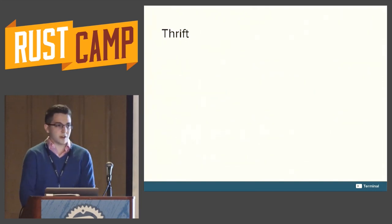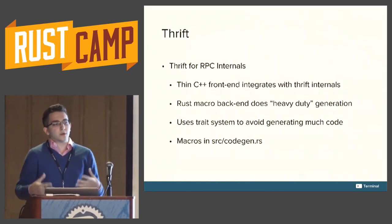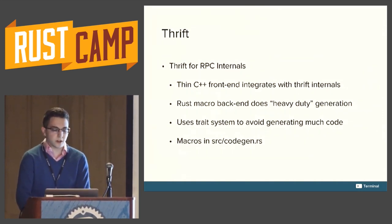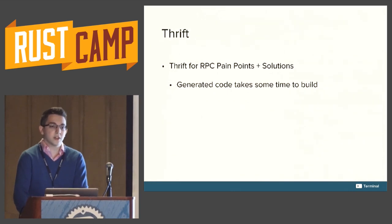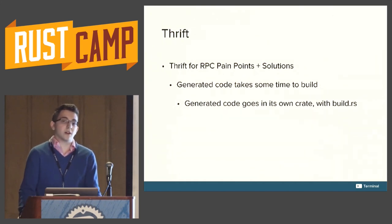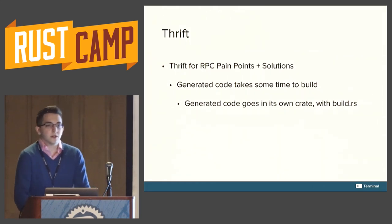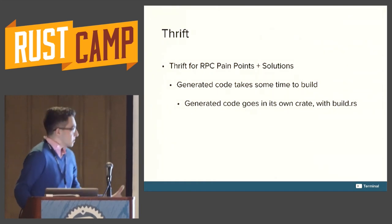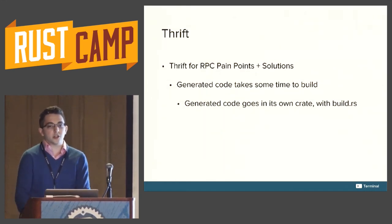For the curious, the macros are in codegen.rs — a pretty good example of a complicated use of macros that's not trying to add new language features, just expanding things. A pain point: the generated code takes quite some time to build. If you have a large interface, you're generating potentially a lot of code that LLVM needs to optimize. One way we've gotten around this is by faking incremental code generation by moving things into their own crate. It helps get around the fact that rustc takes a long time to build very large crates. We also used Cargo's build system to build the codegen and test it on every change to a Thrift file.